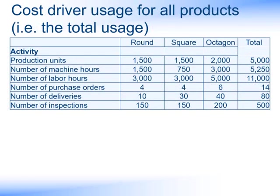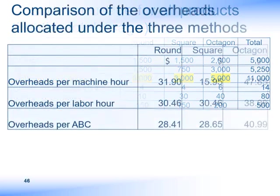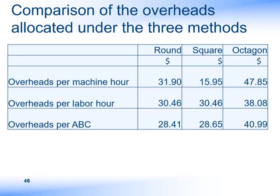Returning to our basic data: when allocating overheads based on machine hours, the square product uses half the number of machine hours to produce the same number of products as the round one, which is why the overheads allocated to square are half that allocated to round. When looking at labour hours as the basis, the round and square products use exactly the same number of labour hours, and therefore were allocated the same overheads. If we look at the costs allocated using an ABC basis, the round and square products do have similar levels, which reflects that they use similar levels of activity. Octagon uses more labour hours, more machine hours, and also has more deliveries and more inspections, and therefore should be allocated more of the overheads.